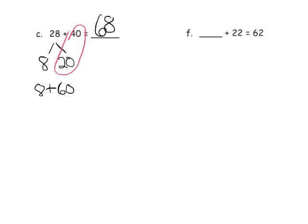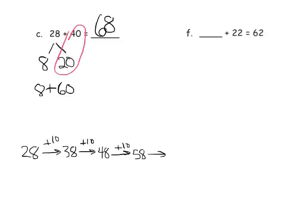We could also use the arrow method. We start with 28 and add 10, giving us 38. Add another 10, giving 48. Add another 10, giving 58. And finally add one more 10, giving us 68. Both the number bond and the arrow method give us 68.